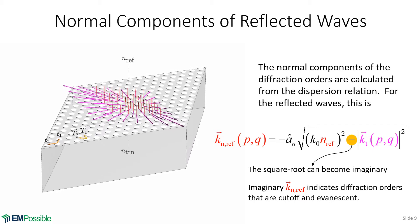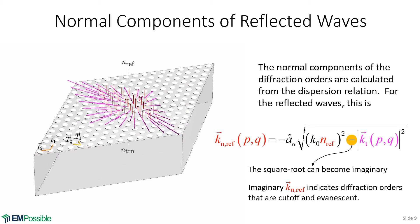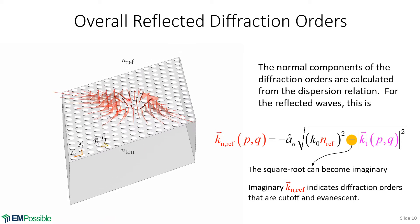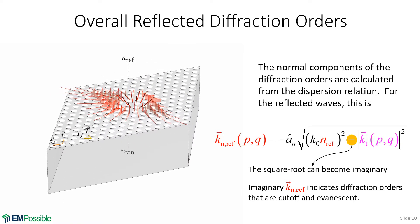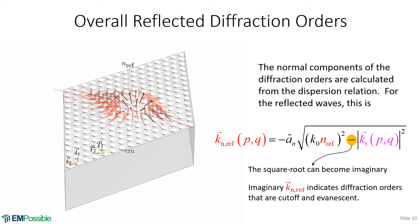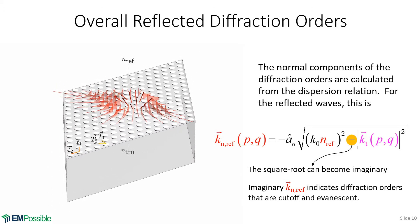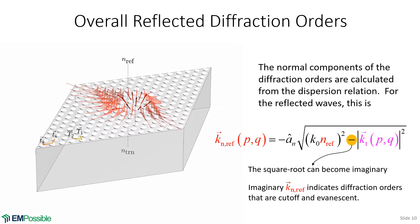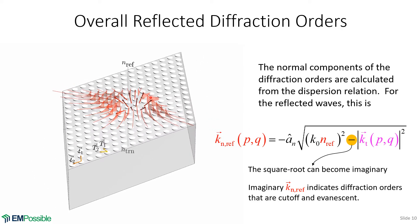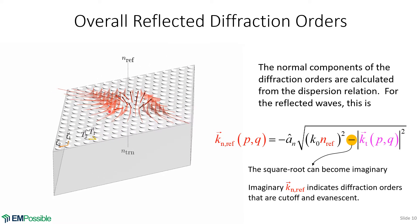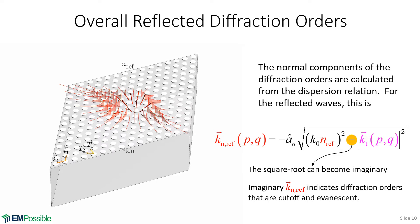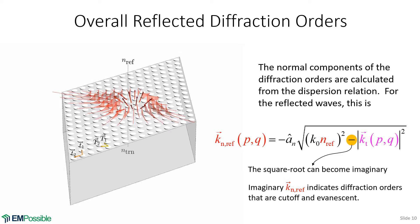Combining the tangential and normal components, we see that the lowest-order diffraction orders are actual waves that carry energy away from the diffraction grating, propagating in various directions. The higher-order fields that are cut off are evanescent, drawn as decaying waves. Notably, the higher-order diffraction orders that are cut off decay more quickly. A low-order cut-off mode decays relatively slowly, while super high-order ones decay very quickly. So it's the lowest-order cut-off modes that have the slowest decay, though they still usually decay pretty quickly.